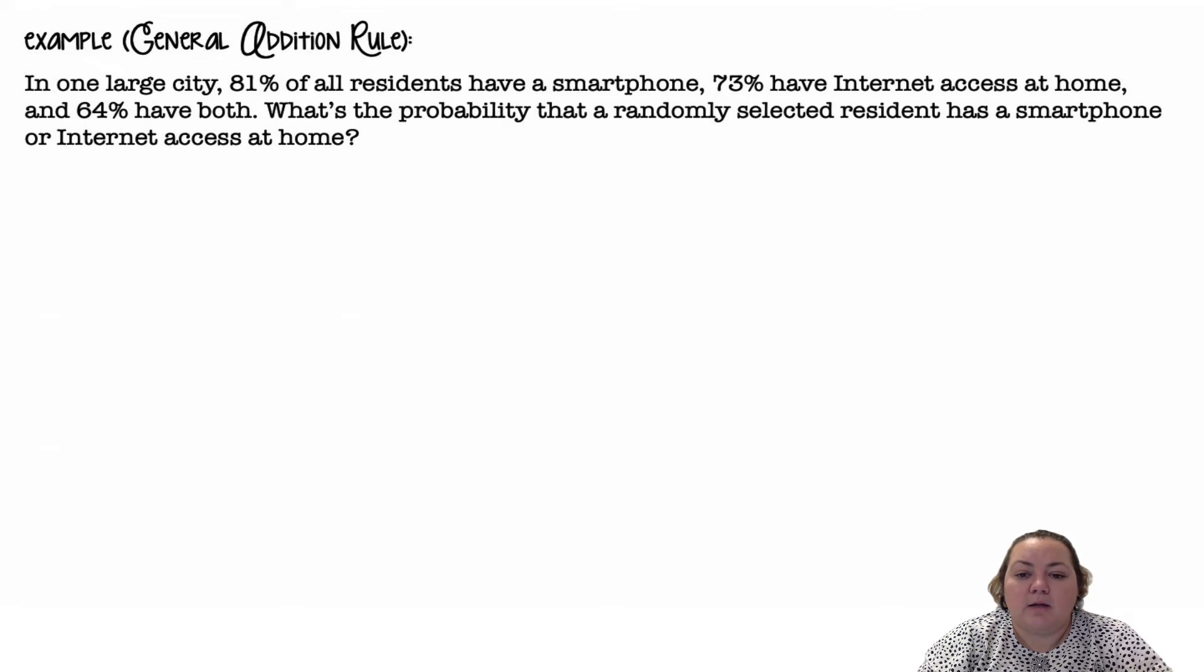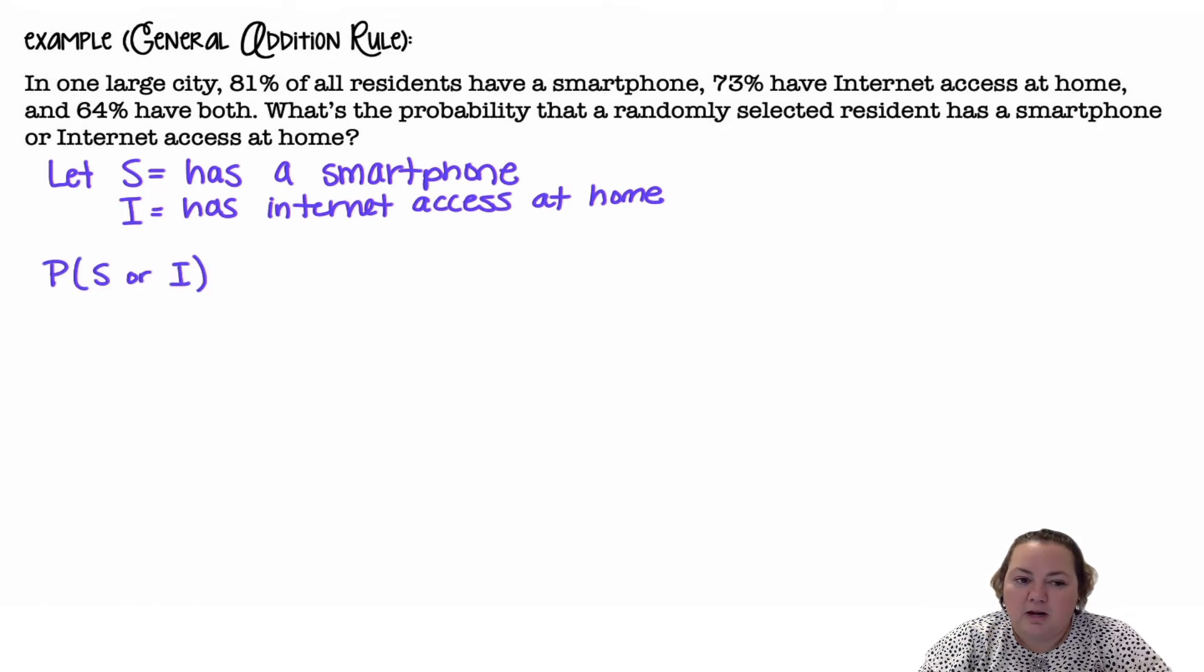What is the probability that a randomly selected resident has a smartphone or internet access at home? So we're going to let S equal has a smartphone, I equal has internet access at home. So I'm defining my random variables.